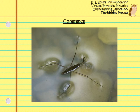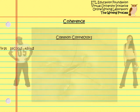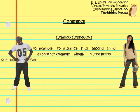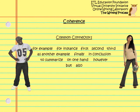Some common connectors include: for example, for instance, first, second, third, as another example, finally, in conclusion, to summarize, on one hand, however, but, and also.